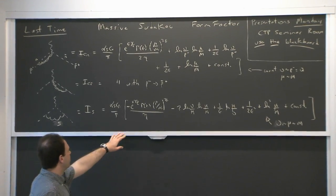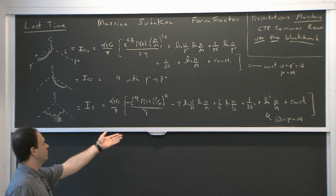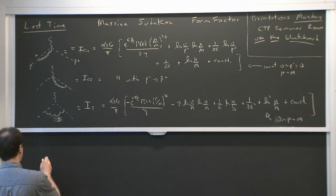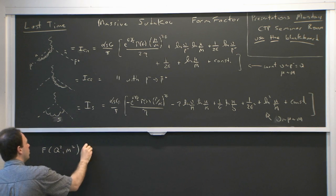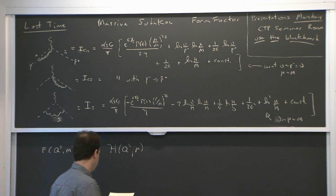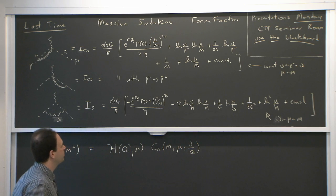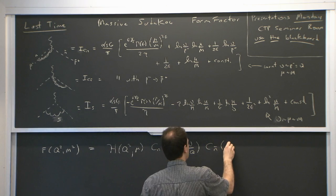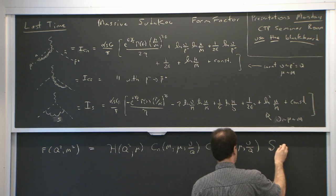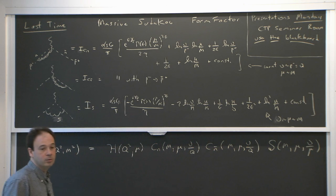What we'll do is add counterterms to remove the 1/epsilon poles and 1/eta poles. You're left with a finite result that's a function of the cutoffs. When you put things together, the cutoffs should cancel out of the physical observable, which here was the form factor. The form of the factorization theorem has a hard function — just the Wilson coefficient — some collinear function C_n, C_n-bar, and a soft function. There's additional dependence on a parameter nu, not just mu.